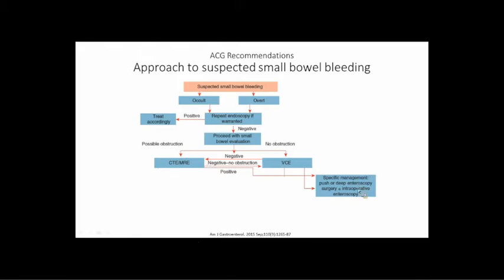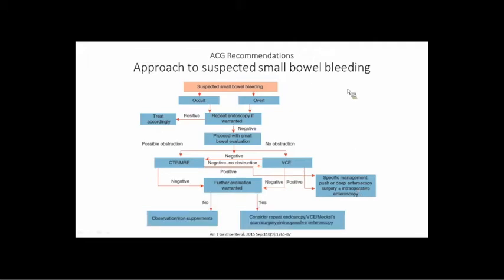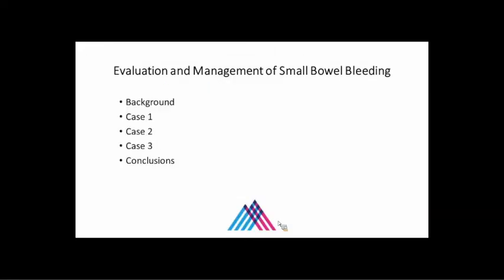Once you've done your capsule and CT — if you find a positive finding, you do something about it, whether with enteroscopy, surgery, or medical therapy. If negative, that's when we start scratching our heads. If the patient is asymptomatic and their iron levels come back up with ferrous sulfate, observation and iron supplementation is a very reasonable strategy. A lot of this is just ruling out really bad things — a cancer, a huge ulcer, active bleeding — and then supporting with medical therapy. Many of these people do just fine. If there's ongoing bleeding, you may want to repeat studies or proceed to enteroscopy or surgery.